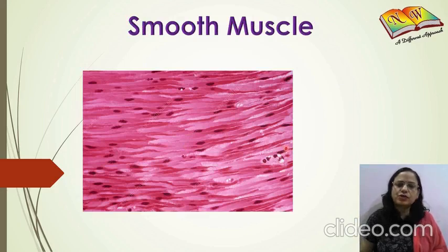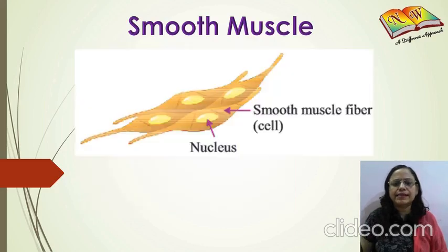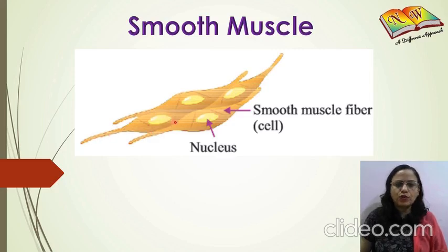Next are smooth muscles, also known as non-striated muscles. As you can see in the image, this is the microscopic view of smooth muscle fibers and you cannot see any striations or bands here. In the diagrammatic representation, the cells are spindle-shaped with a prominent nucleus in the center, and there are no light and dark bands present.